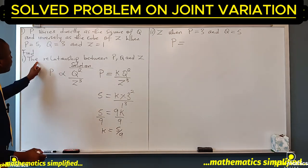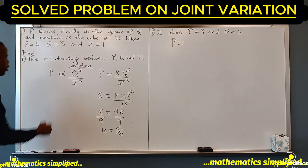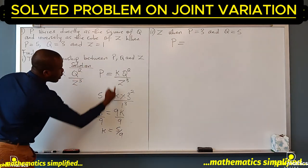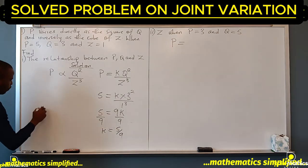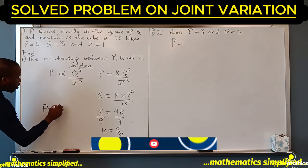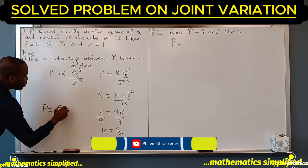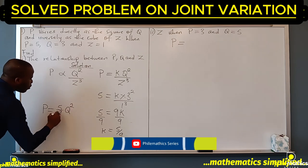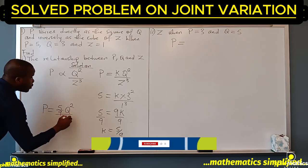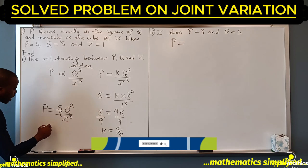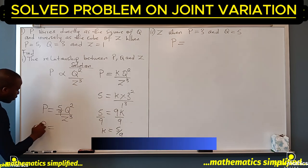We'll find that k is 5 over 9. So to get the relationship between p, q, and z, we have to substitute what k is here.